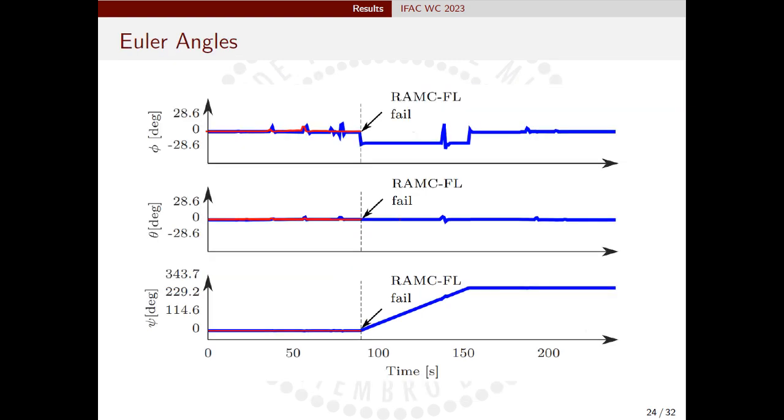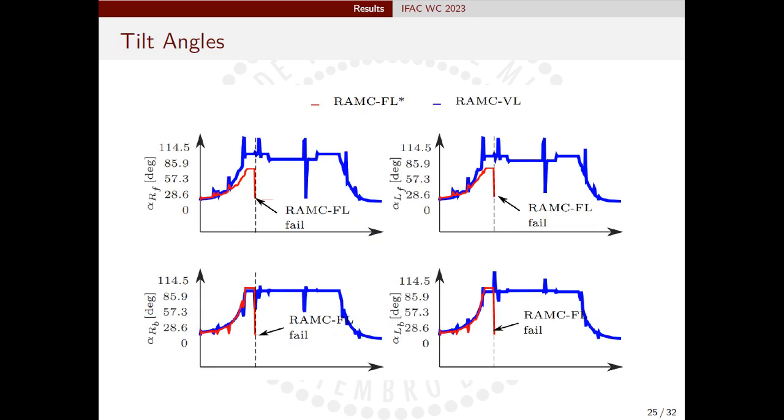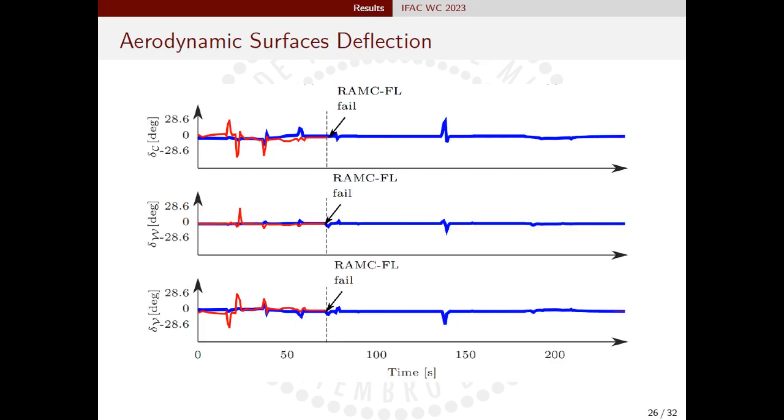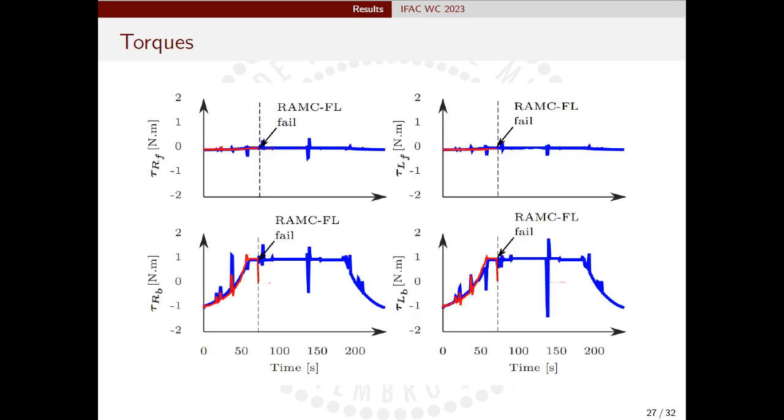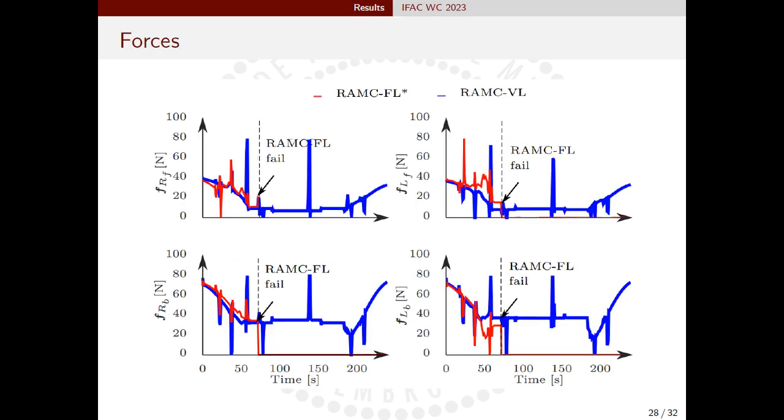The presented Euler angles allow us to observe the beginning of the UAV's circular path by examining the rolling angle. And the tilting angles allow us to observe that the UAV effectively performs the conversion of the tilting mechanisms transitioning from helicopter mode to airplane mode and vice versa. Furthermore, note that all the deflections of the aerodynamic surfaces, as well as the torques applied by the tilting mechanism and the forces applied by the propellers remained under feasible values.